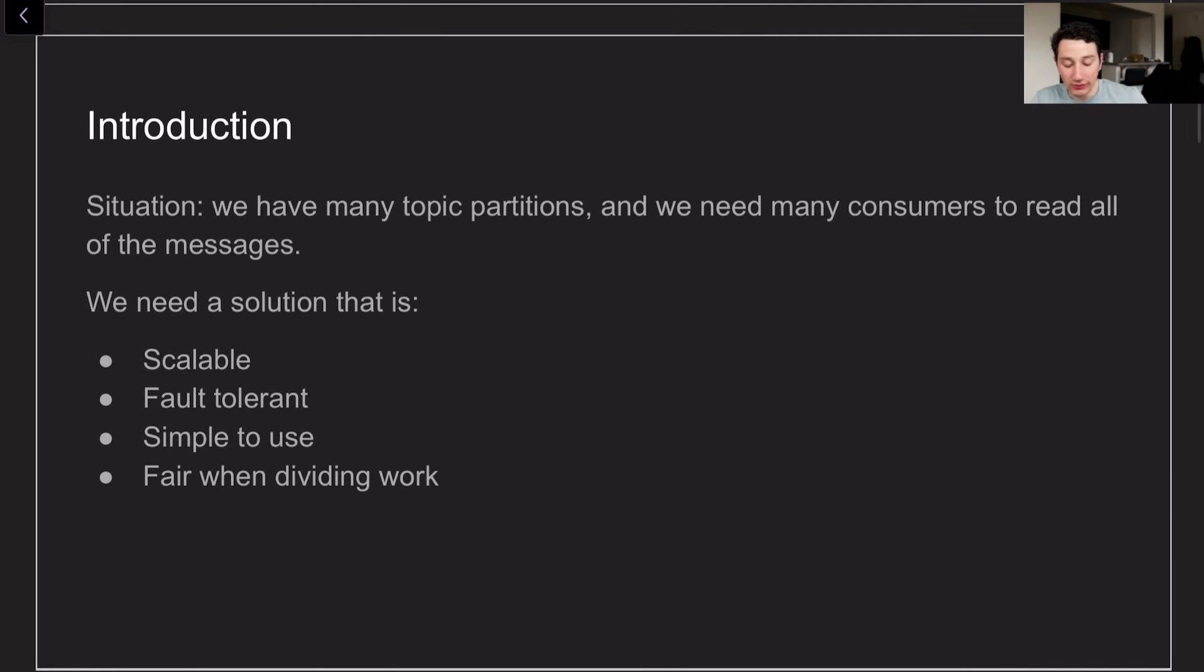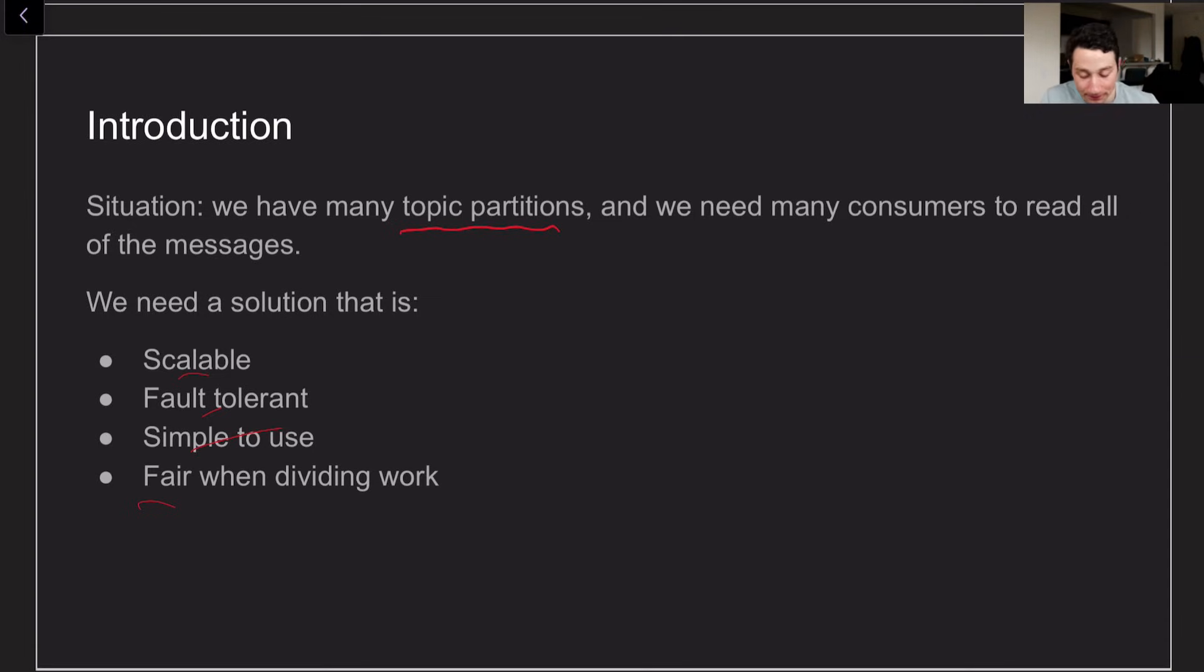Let's imagine that we have many different topic partitions right, they all contain messages that we're interested in subscribing to and we also have many different consumers. The pool of consumers themselves might actually be dynamic - there may be consumers being added to that pool, consumers may be failing in that pool, such as the nature of dealing with distributed systems. So we want to be able to read all of the messages in a way that's scalable, fault tolerant, easy to use and also fair. If I have a bunch of consumers and they can all process similar amounts of messages it wouldn't be good if one consumer is processing significantly more than all the others.